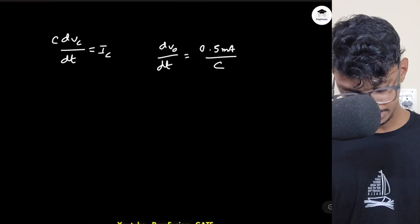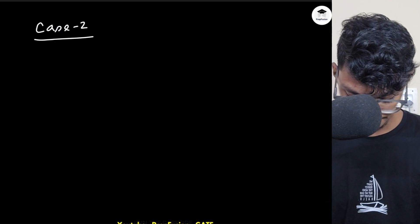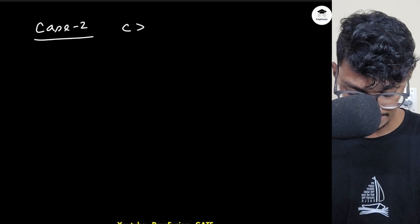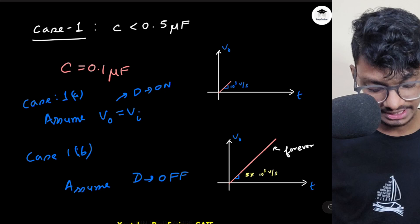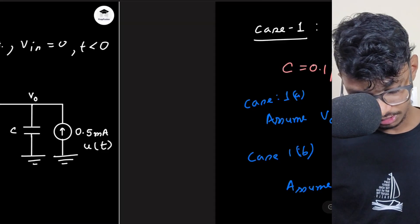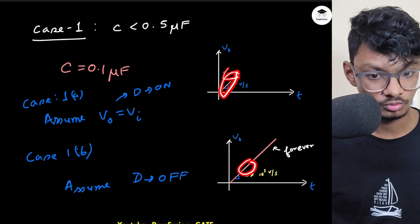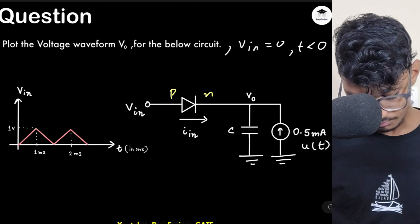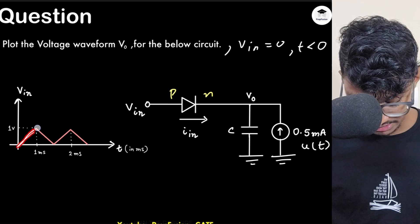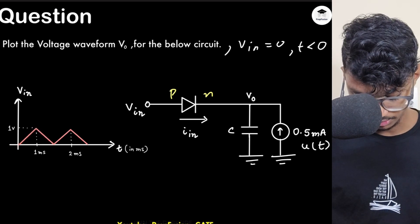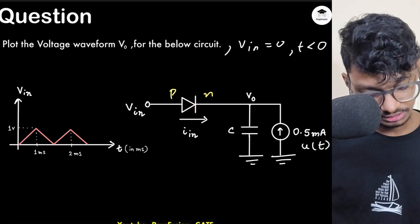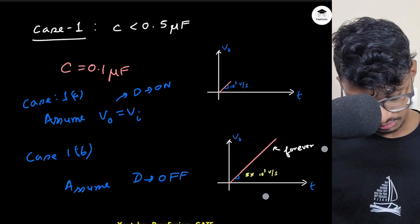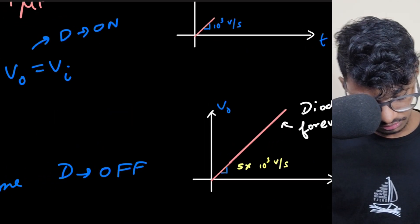Now for Case 2: when C > 0.5 microfarad, interesting things happen. The n-side slope is now slower than the p-side slope. During the first half cycle — from 0 to 1 millisecond of the triangular waveform — the diode will be ON. In Case 1, the diode was forever off.